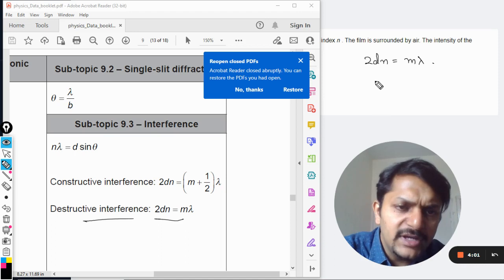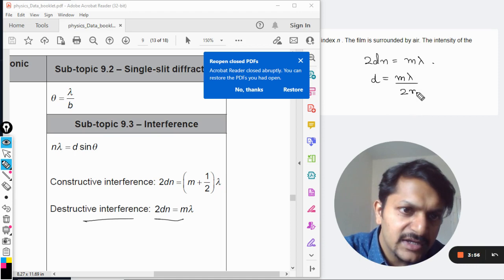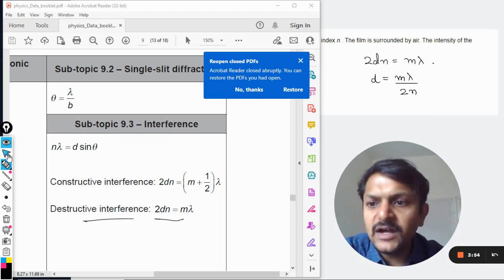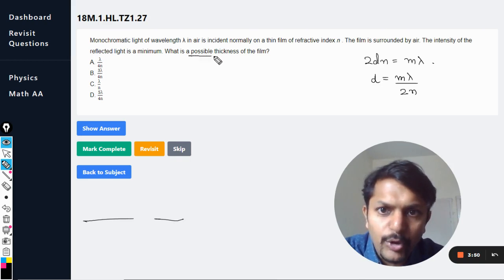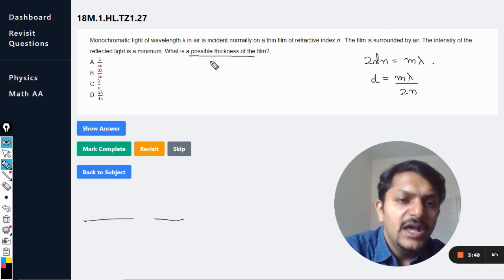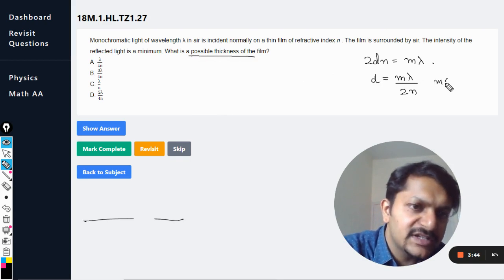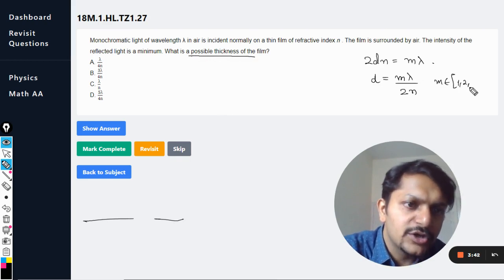It only means that the possible values of d, these are the possible values that we are discussing here, the possible thickness of the film. And what is m? M is an integer which is starting with one, so it could be one, two, three, four, and so on.